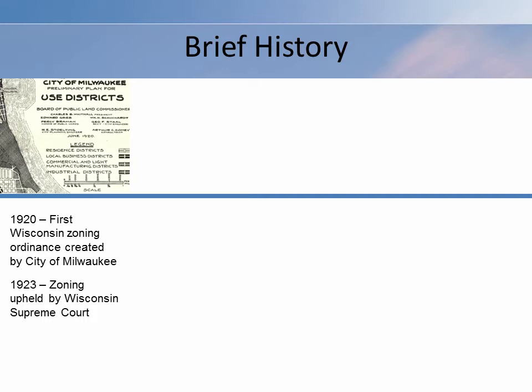Three short years later, the U.S. Supreme Court considered the landmark case of Euclid v. Ambler. This case confirmed the constitutionality of zoning and gave rise to the adoption of zoning ordinances throughout the nation.